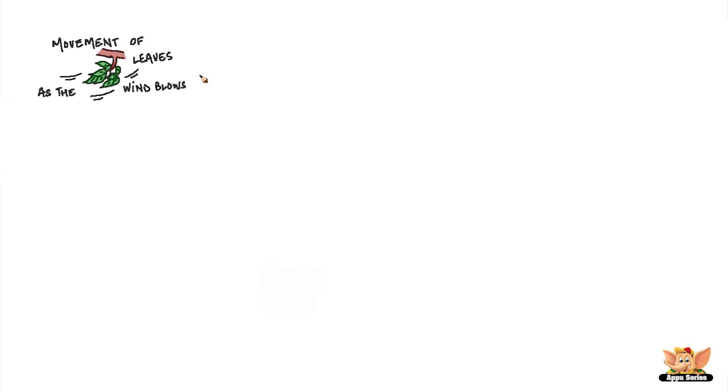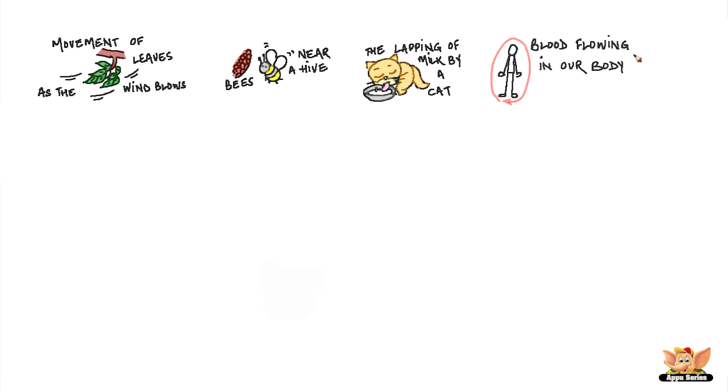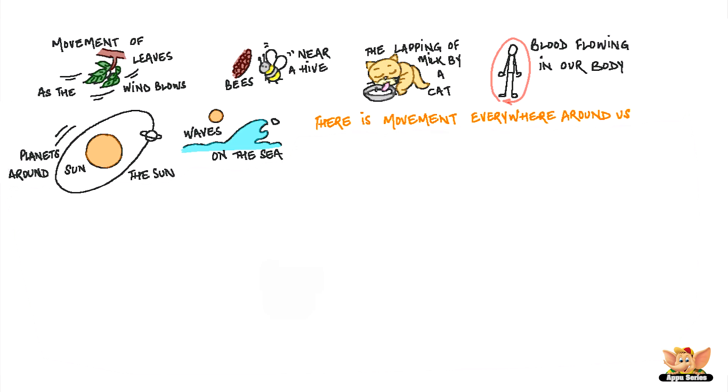The movement of leaves as the wind blows, of bees near a hive, of the lapping of milk by a cat, of blood flowing in our body, movements of planets around the sun, waves on the sea - we can see that there is movement everywhere around us.